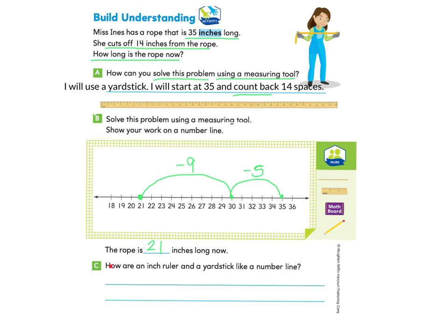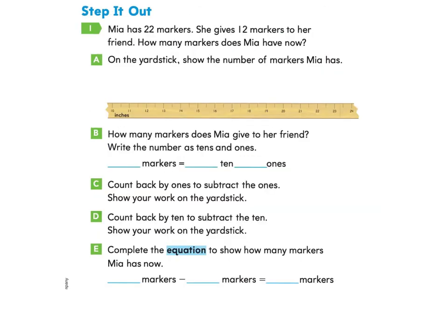So how are an inch ruler and a yardstick like a number line? I can answer that they both show numbers and the numbers on both are evenly spaced. This is the same amount every time, and here it's the same thing—every time is evenly spaced. Nice work. Now let's take a look at the next page, page 493, under Step It Out.